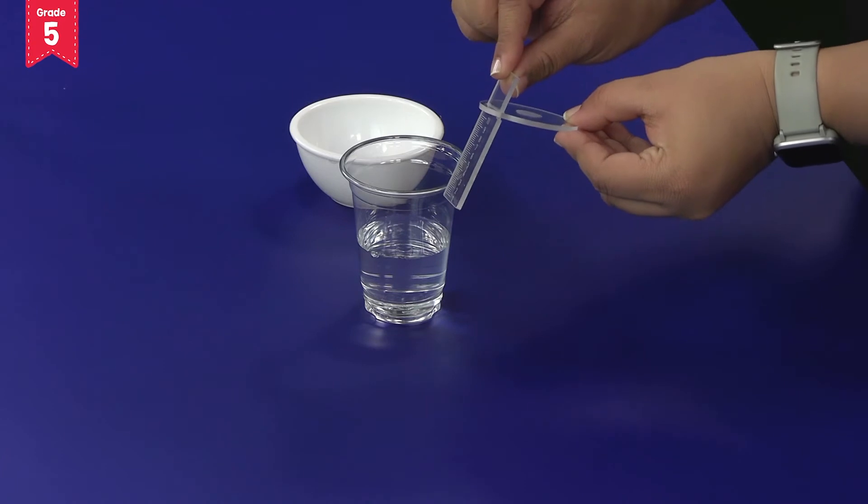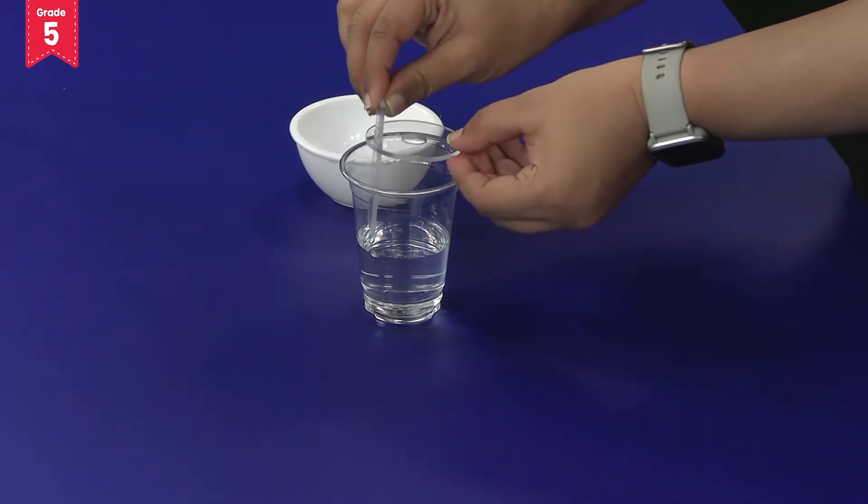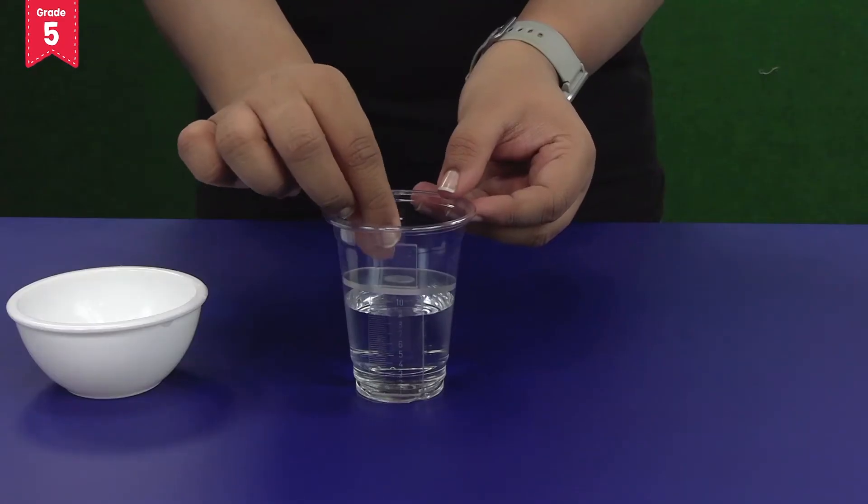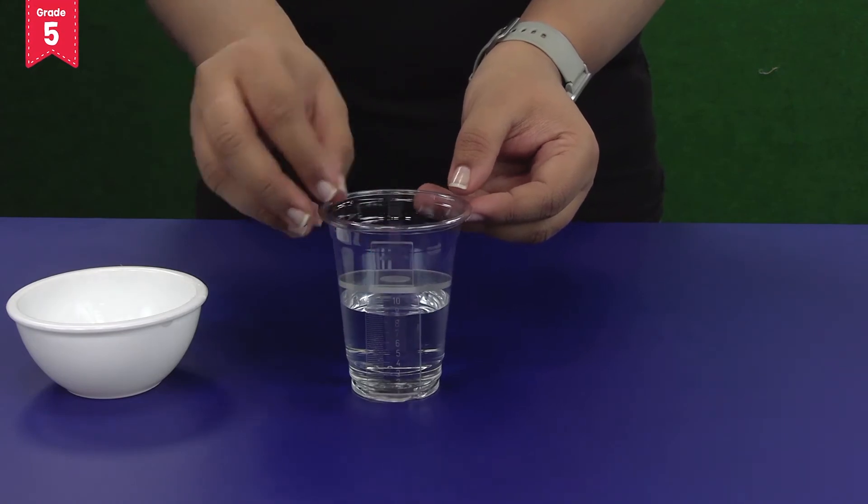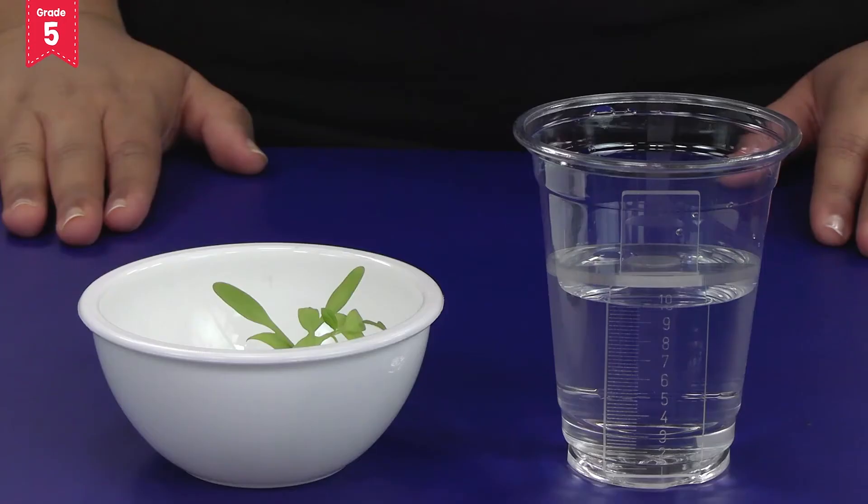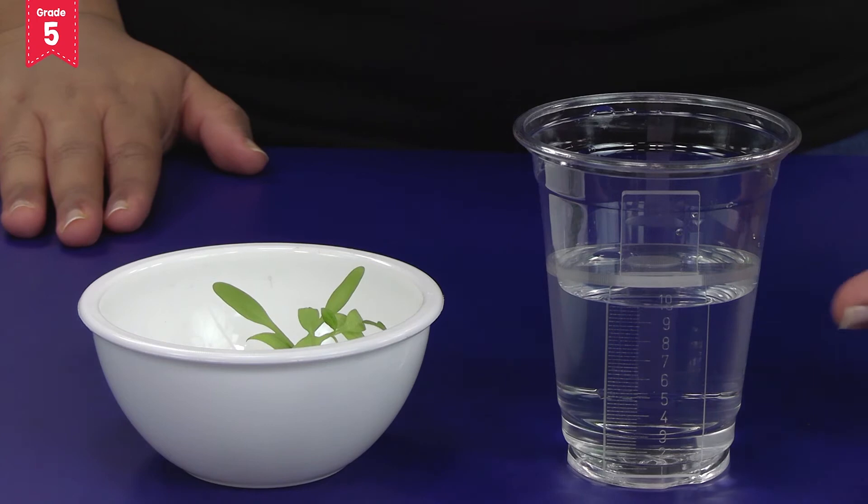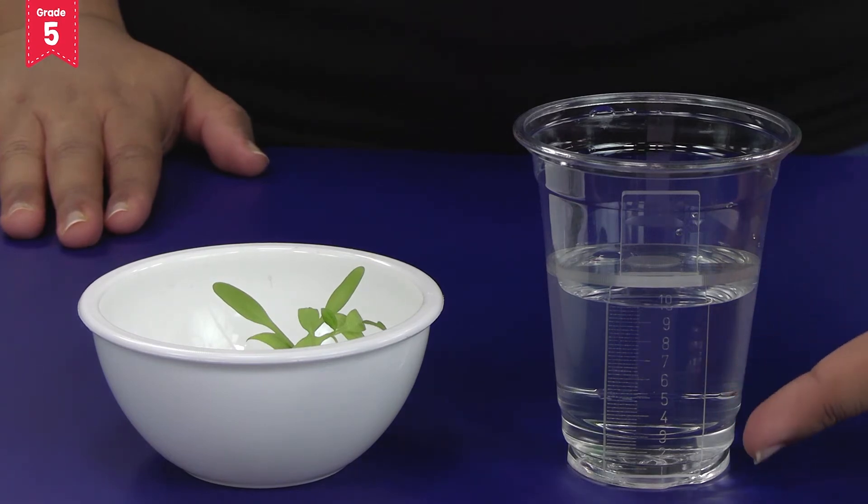Now fix this setup inside the disposable glass like this. Ensure that the readings on the scale are visible from the outside.